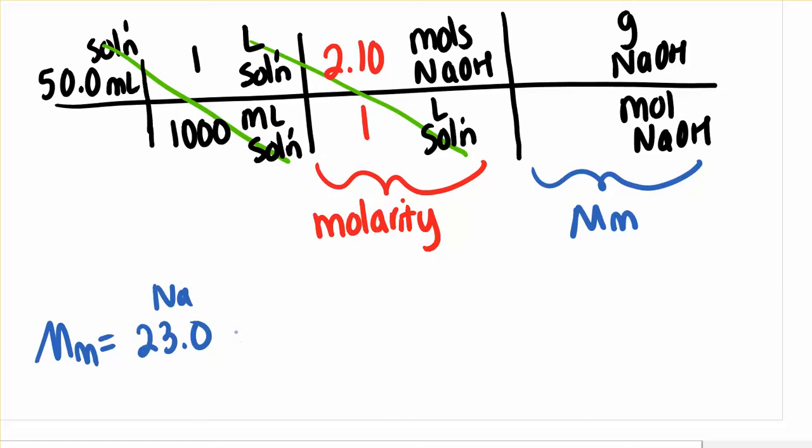Sodium's is 23. Oxygen's atomic weight is 16. And we have one for the hydrogen. That's 40 grams per mole for the molar mass.